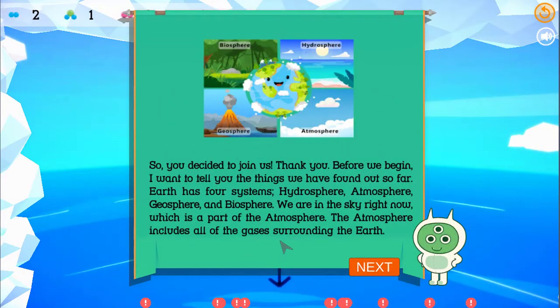So, you decided to join us. Thank you. Before we begin, I want to tell you the things we have found out so far. Earth has four systems: hydrosphere, atmosphere, geosphere, and biosphere.